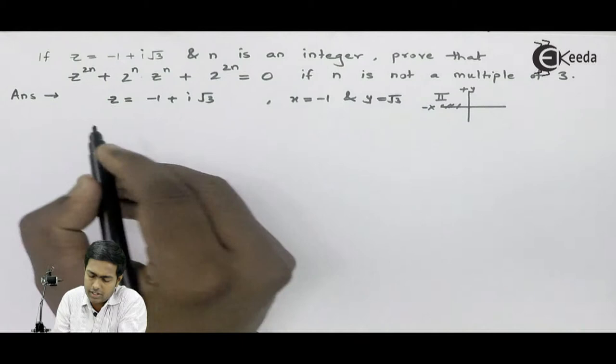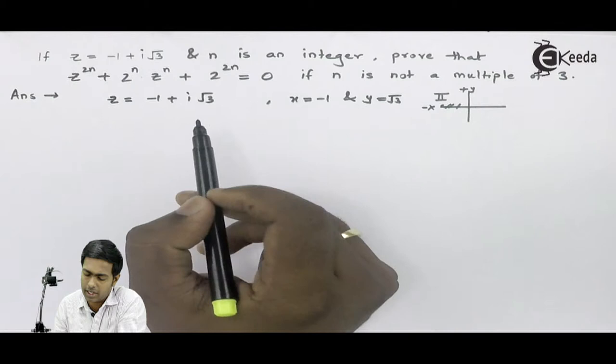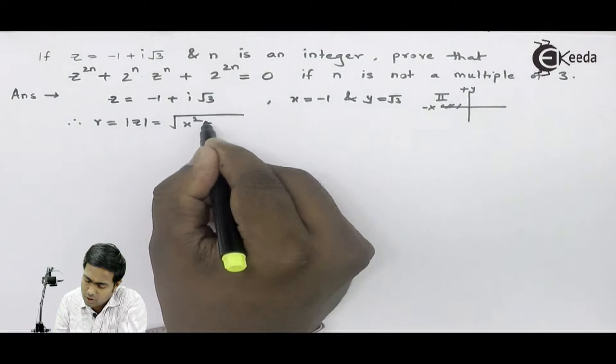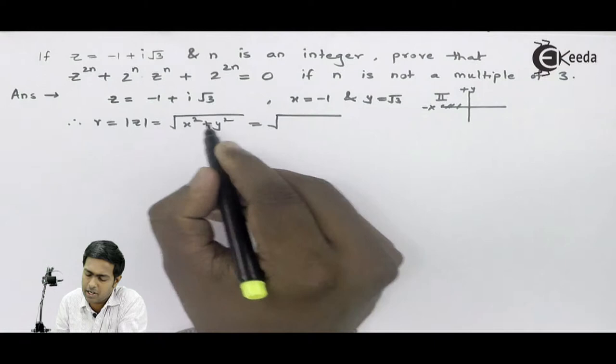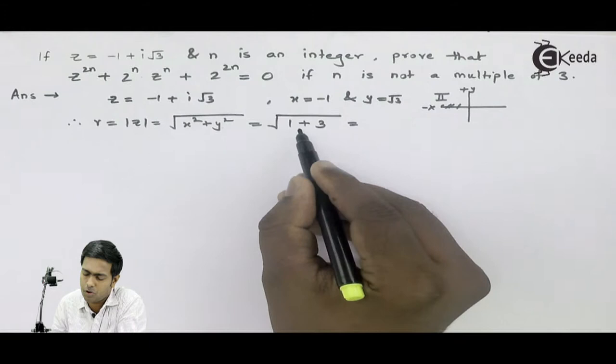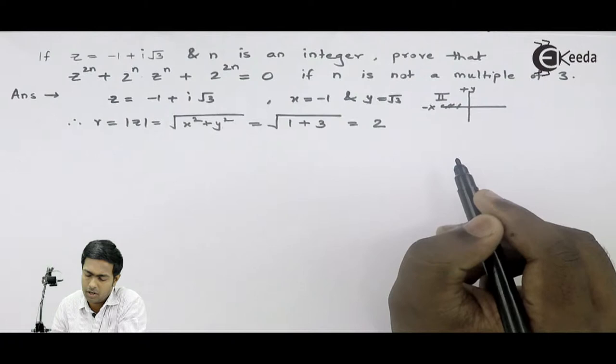We'll find the modulus and then the argument so that we can convert the given number to polar form. To find modulus r, the formula is square root of x squared plus y squared. Here x is minus 1, so x squared is 1, and y is root 3, so y squared is 3. It becomes 4, and the square root of 4 is 2. So we get r equal to 2.